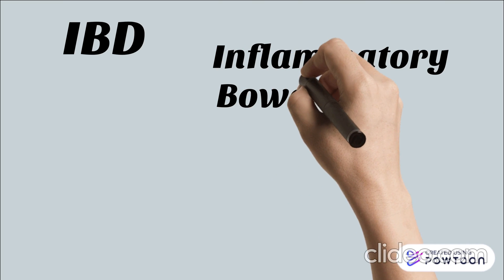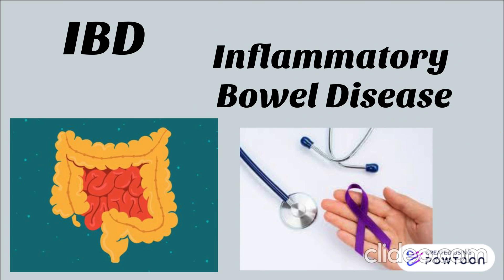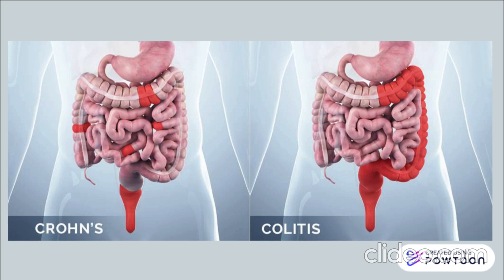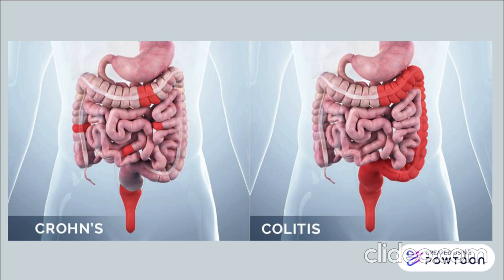IBD stands for inflammatory bowel disease and is a chronic disorder characterized by inflammation anywhere along the gastrointestinal system. There are two types of IBD: Crohn's disease and ulcerative colitis. There are significant endoscopic features that differentiate colitis and Crohn's disease. Crohn's disease can result in inflammation in multiple sections of the GI tract, from the oral cavity to the anus. Ulcerative colitis commonly causes inflammation confined to the colon or large bowel and is usually concentrated in one area of the GI tract.